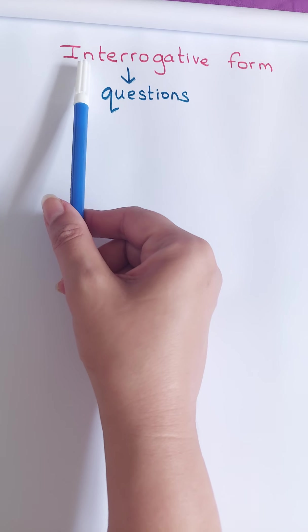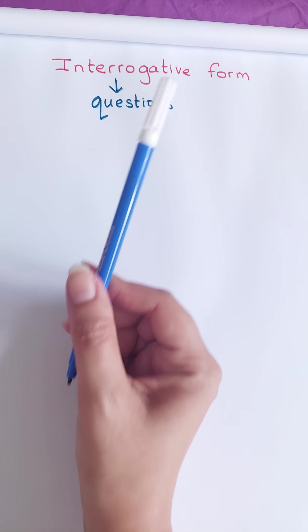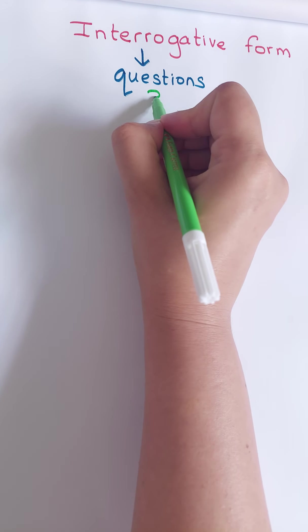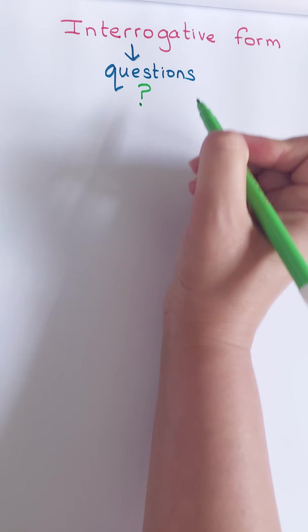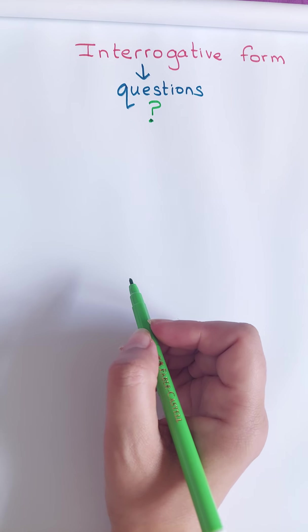You need to know how to read this. Interrogative form. Et on n'oublie pas que lorsqu'on pose des questions, on n'oublie pas qu'on a besoin de mettre le point d'interrogation à la fin. Et le point d'interrogation en anglais, on dit question mark. Très bien.